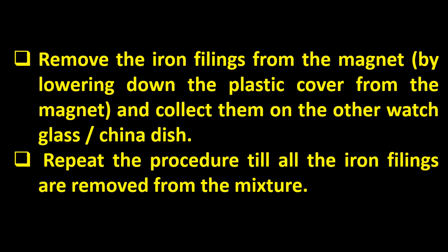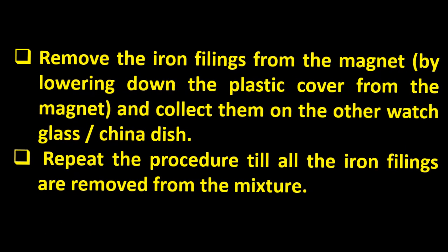Now remove the iron filings from the magnet. How can we remove them? Definitely, we wrapped the magnet in the sheet, so by lowering down the plastic cover from the magnet and collect them on the other watch glass or china dish. All the iron filings collect in the other dish. We have to repeat the procedure till all the iron filings are removed from the mixture. In this way, we will separate them very easily.